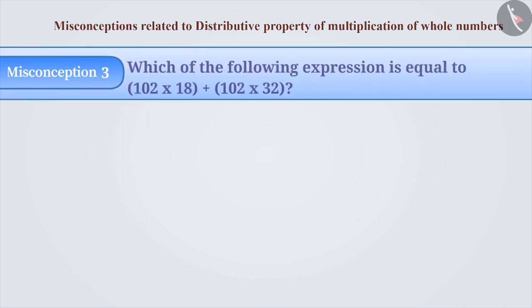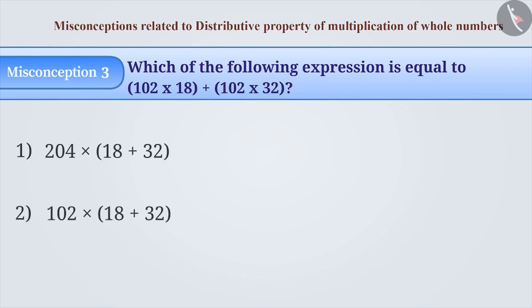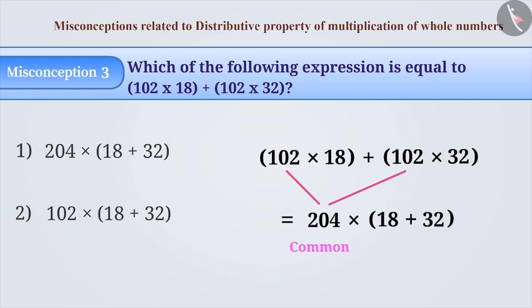Misconception 3: Which of the following expression is equal to (102 × 18) + (102 × 32)? While taking 102 as a common term from (102 × 18) + (102 × 32), 102 in the first bracket is added in the second bracket. Therefore, option 1 is incorrect.